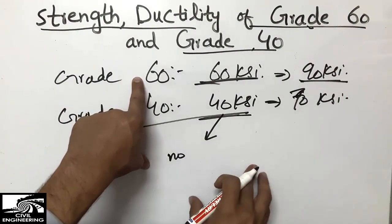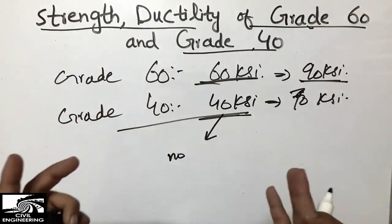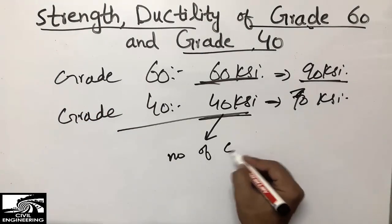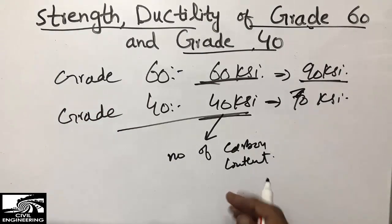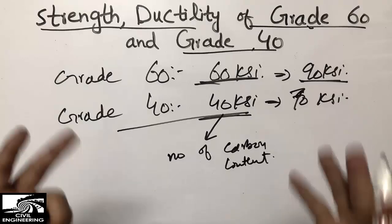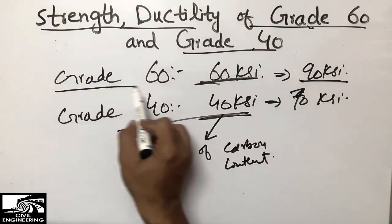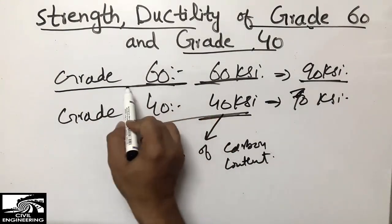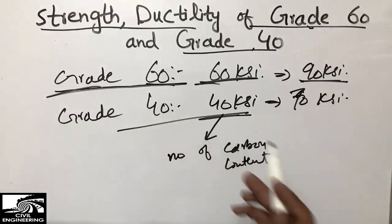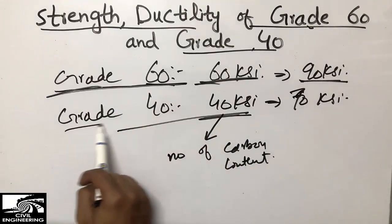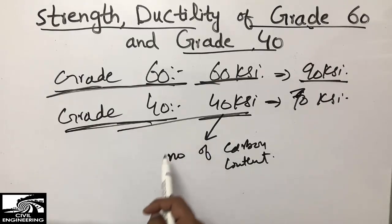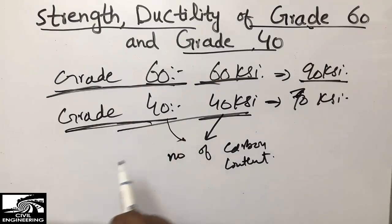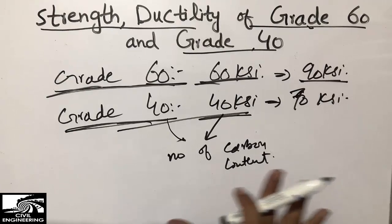As defined earlier, strength is most related to carbon content. The more carbon content in a steel bar, the more strength it will have. That is why Grade 60 has more strength — it has more carbon content and a denser crystalline structure — while Grade 40 has less carbon content and therefore lower tensile strength.